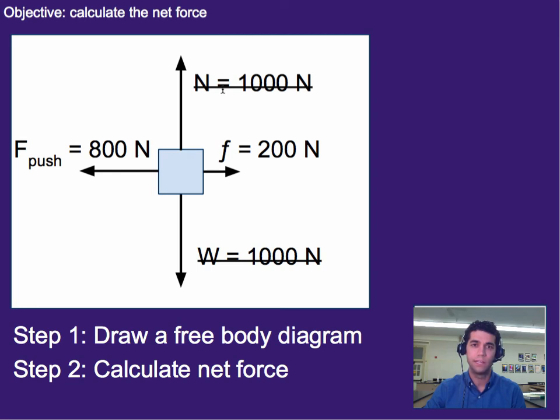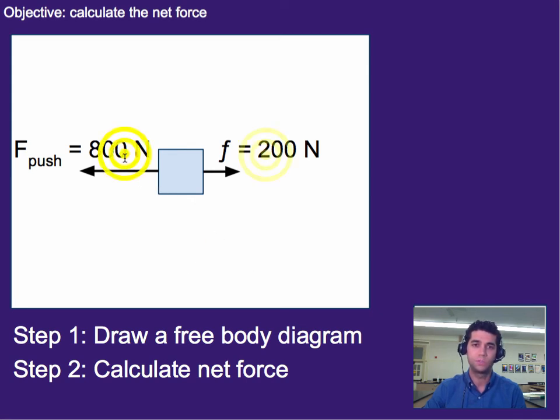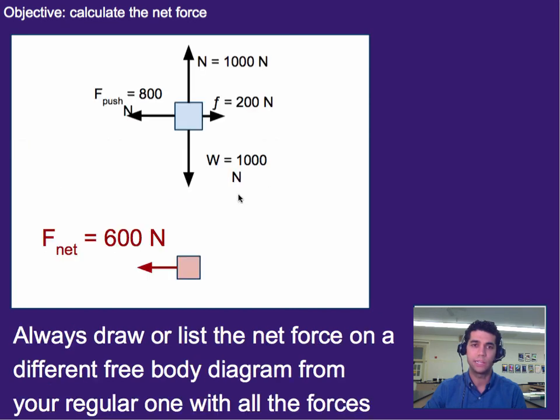Okay, so now step two. Let's calculate the net force. In this case, in calculating net force, we know that these two will cancel out fully, 1000 and 1000. And that leaves us with just focusing on these two guys. Since they're in opposite directions, they subtract, and the net or overall force is going to be 600 newtons.